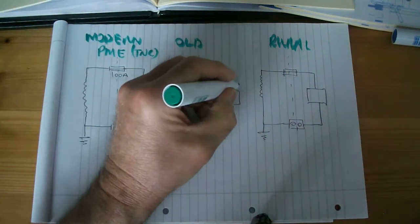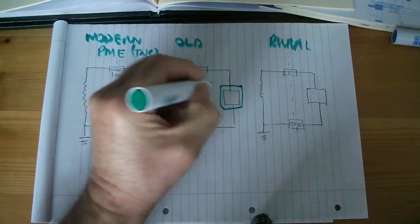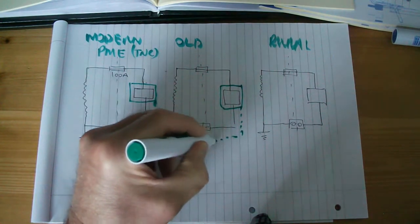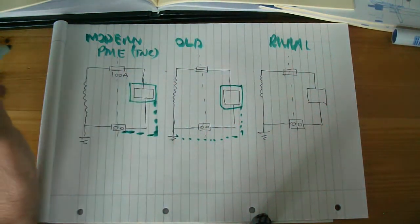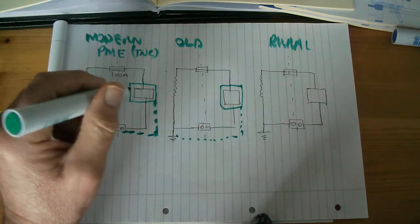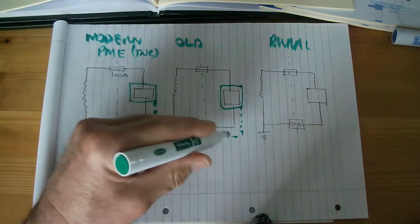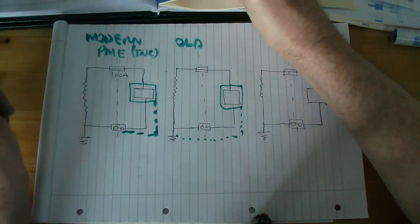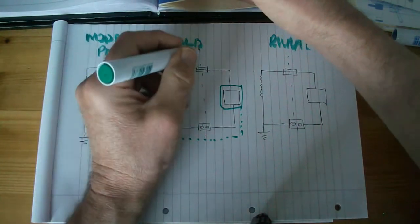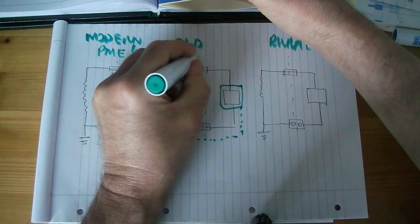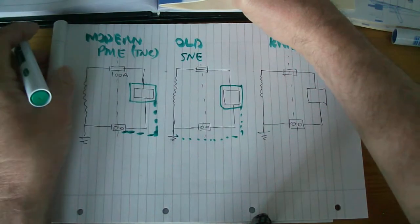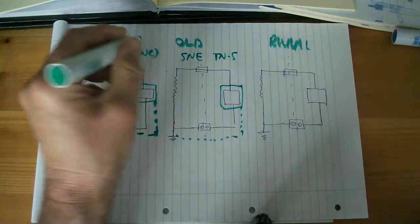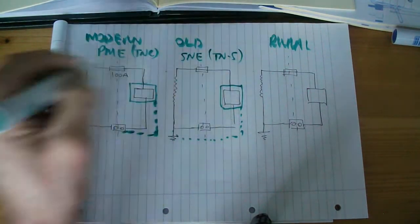In the older systems, again here's another boundary. The earth will effectively, by a separate sheath in the cable, find its way back to the earth point at the star point of the transformer through the sheath of the cable. And that system can often be called SNE or TNS for separate. TNC for combined, TNS for separate.